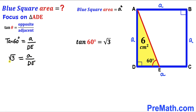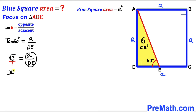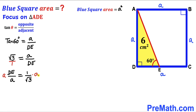Now we tweak the equation: √3 can be written as √3 over 1, and flipping both sides gives DE divided by a equals 1 divided by √3. Multiplying both sides by a, the a's cancel, and our DE segment length turns out to be a divided by √3.